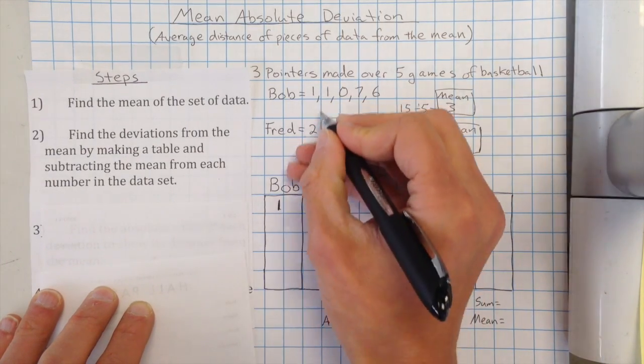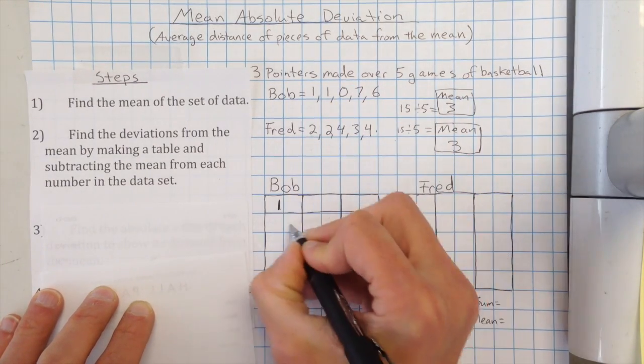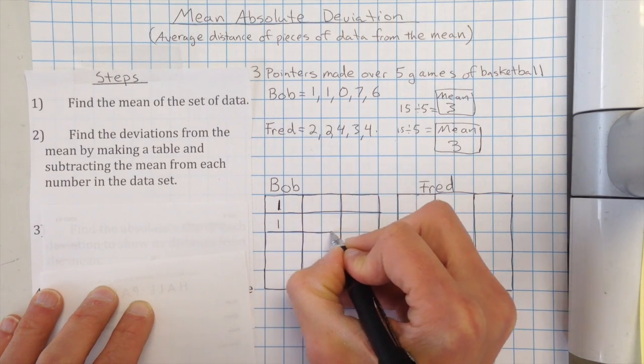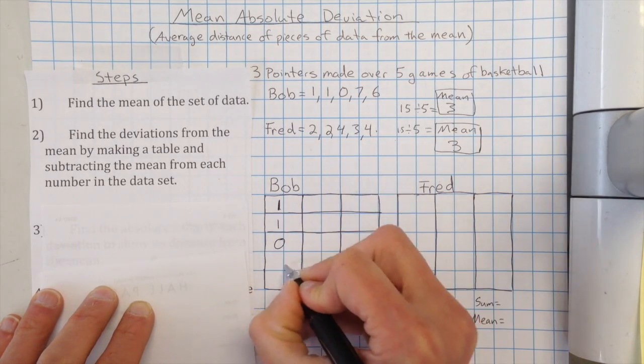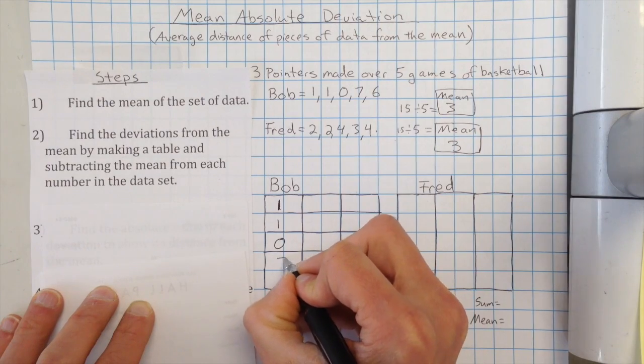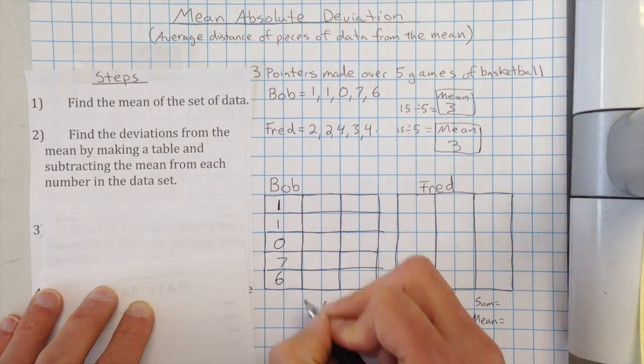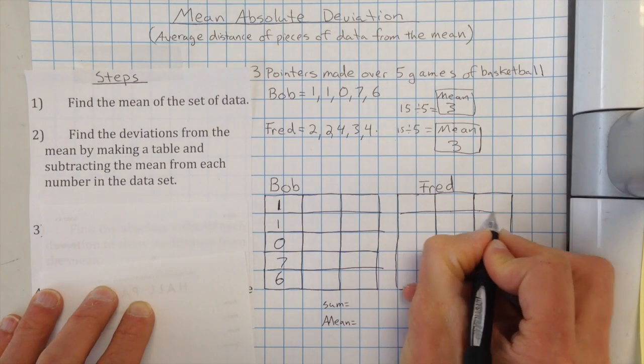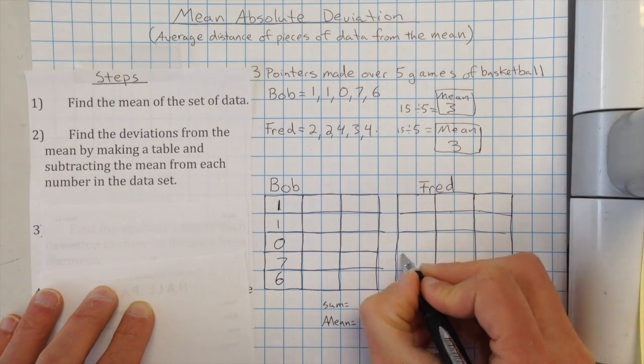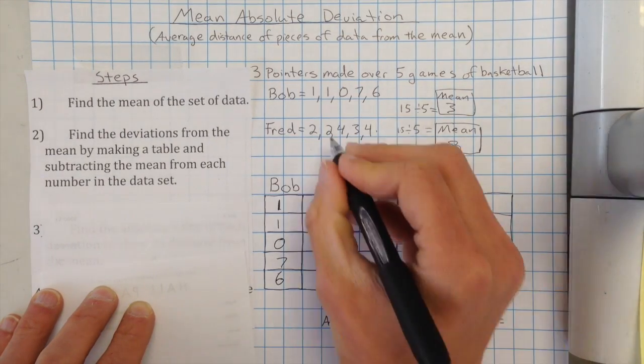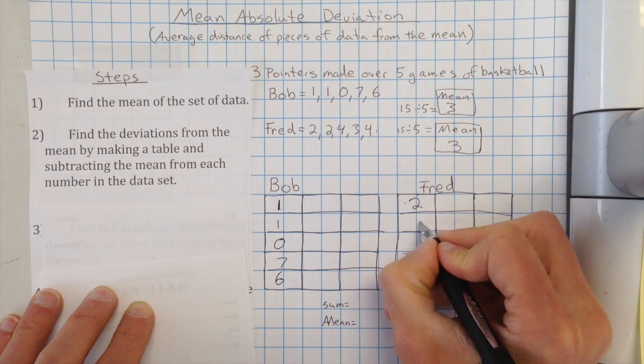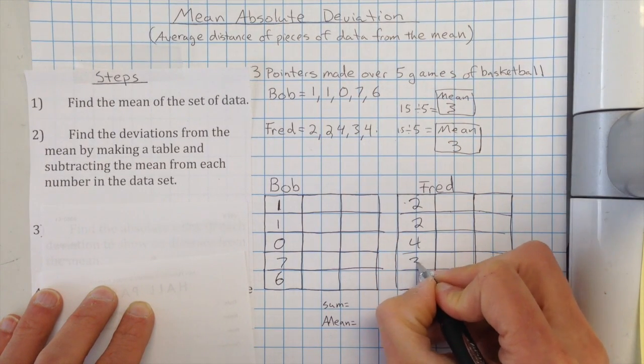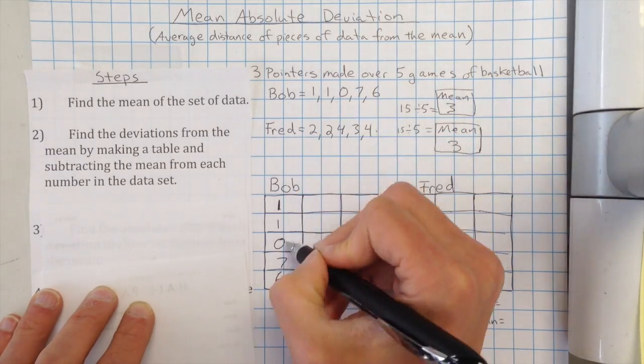So Bob, he had one, made one shot the first time, one shot the second game, zero the third game, seven the fourth game, and then six, the fifth game. Same thing for Fred. Okay, we're going to put his scores in, or his shots made. He has two, two, four, three, and four. So I'm just taking the numbers from the tables.